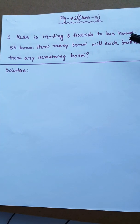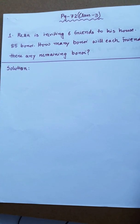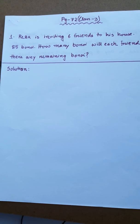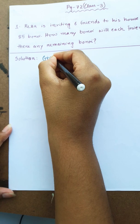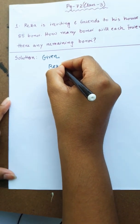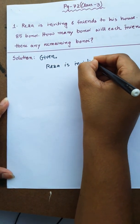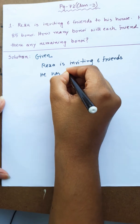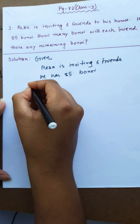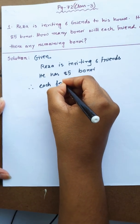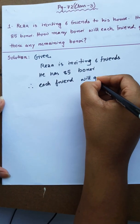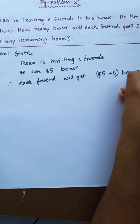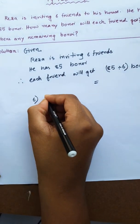Is there any remaining boroy? This is the first math. Reza is inviting 6 friends. He has 85 boroy. Therefore, each friend will get 85 divided by 6 boroy. So we need to work it out roughly: 6 goes into 85.